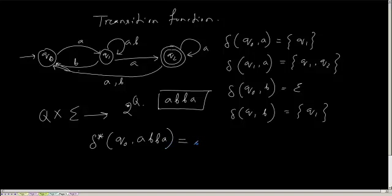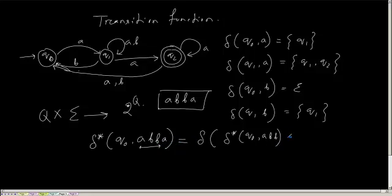That will be equal to delta of - what are the possible states I will get by processing this? So, delta star(Q0, ABB) - after processing the substring A, B, B, I will be remaining with A. In the extended transition function, I have been given the entire string. I have to apply the extended transition function for A, B, B first. Then whatever states I get, I will apply the transition function on the remaining symbol, that is A.